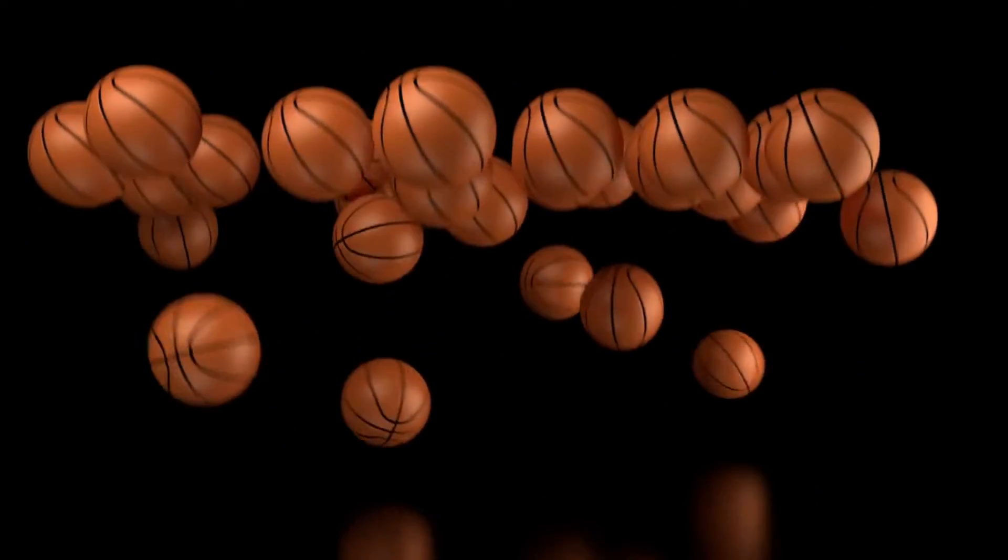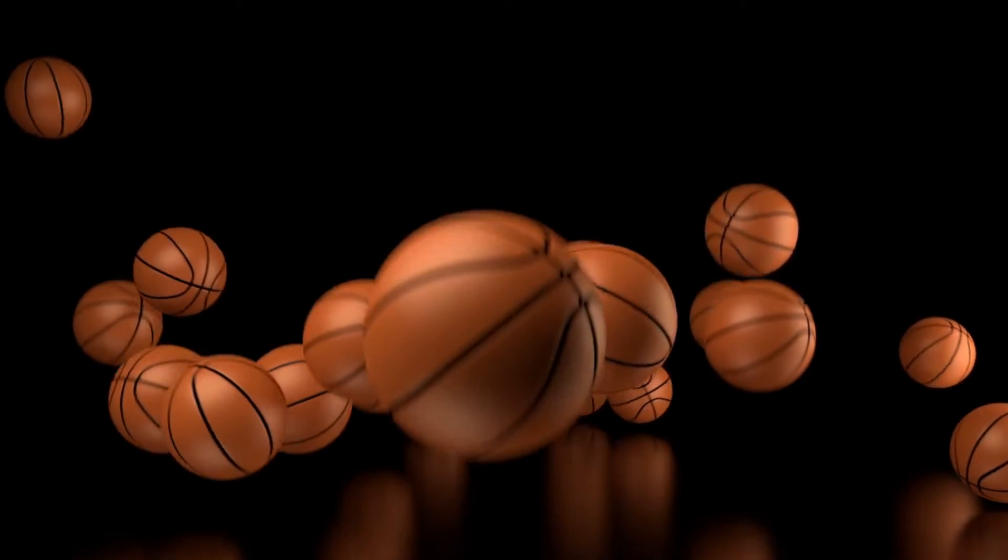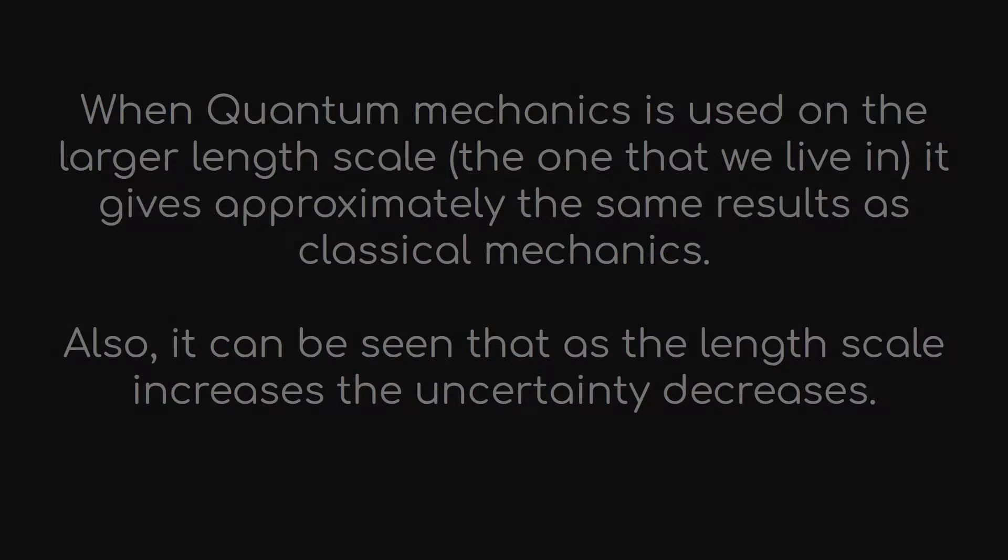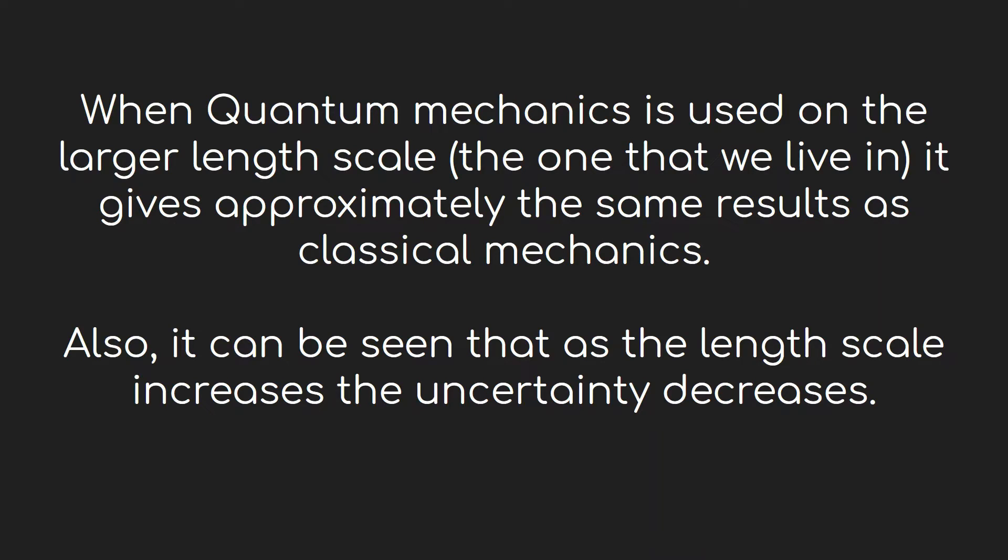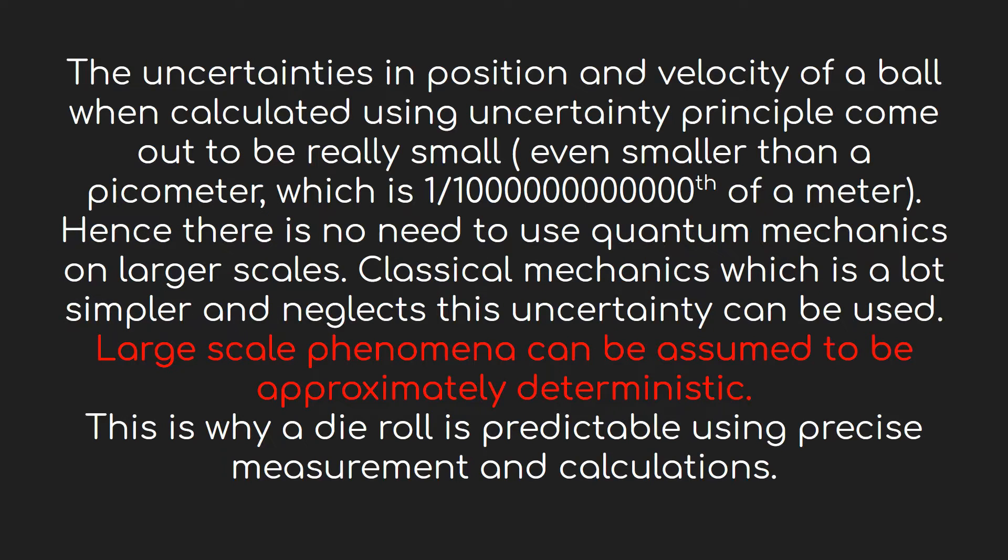Now, let's come back from the subatomic realm to our own world up here. When quantum mechanics is applied to the objects of the larger scale, it reproduces the equations of classical mechanics, and it can be concluded that classical mechanics is only an approximation of quantum mechanics for larger scales. The uncertainty is present in our length scale too, but it is very small to affect the actual results. What classical mechanics does is that it neglects the uncertainty completely, as if it didn't exist at all, and this produces an illusion of a deterministic world, while it is only approximately deterministic at a larger scale.